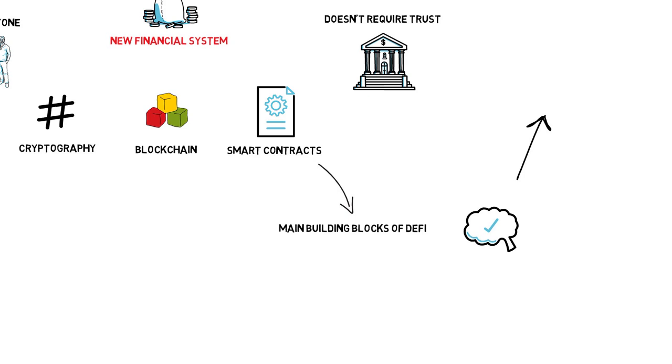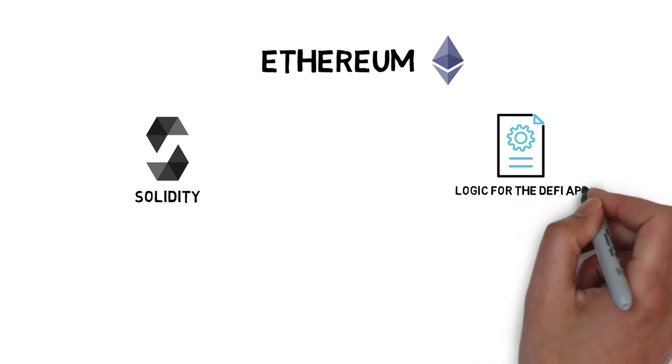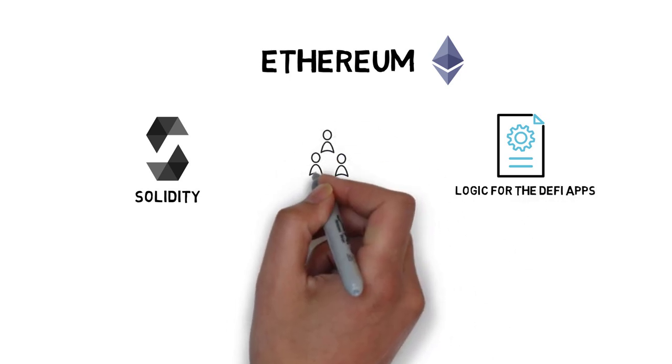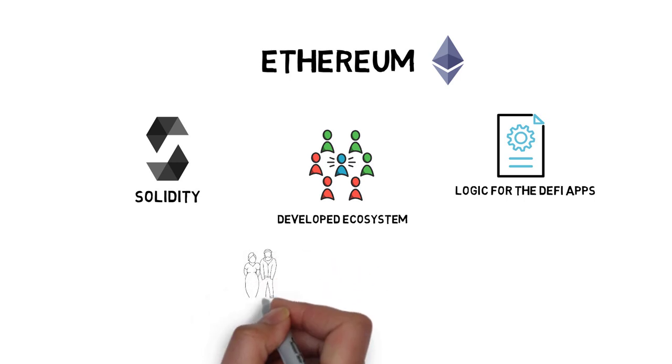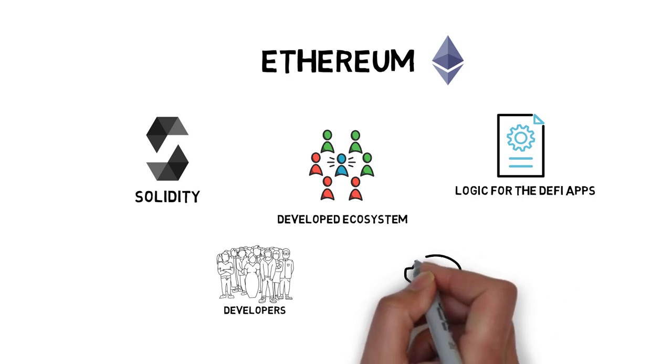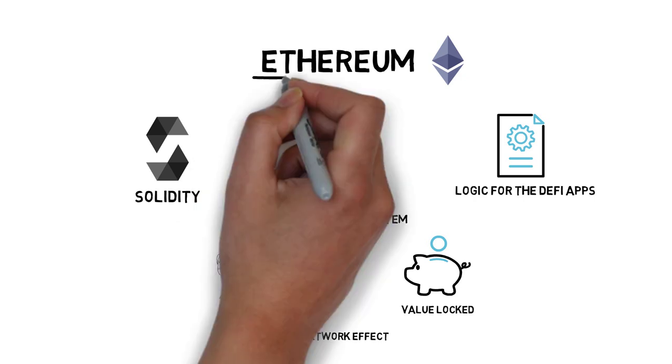It's worth noticing that currently most, if not pretty much all of the DeFi projects are built on Ethereum. The main reason for this is Ethereum's fairly robust programming language called Solidity that allows for writing advanced smart contracts that can contain all the necessary logic for the DeFi applications. Besides that, Ethereum has the most developed ecosystem across all the smart contract platforms with thousands of developers building new applications every day and the most value locked in smart contracts, which create an additional network effect. In fact, all the DeFi protocols mentioned in this video are built on Ethereum.